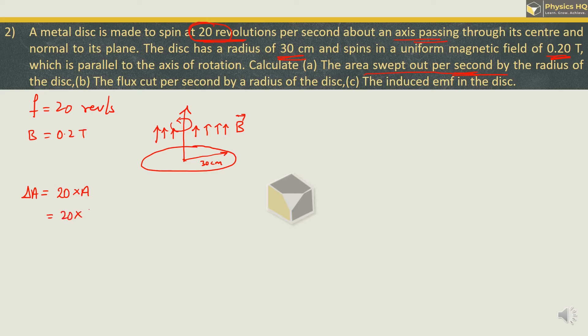So this is 20 into area of the disc will be given by pi r square. So we got 20 into pi which is 3.142. Radius we are given as 30 centimeter or we can take it as 0.3 meter. So here it will be 0.3 square. This will be 20 into 3.142 into 0.09. Now if we multiply this we will have 1.8 into 3.142. This will give us the value as 5.656 meter square approximately.